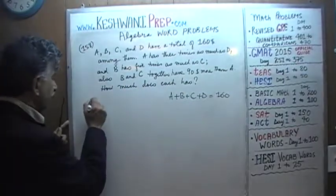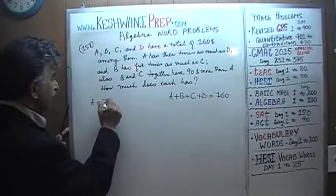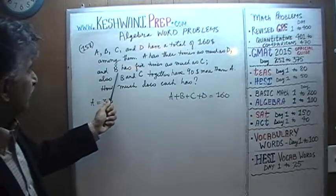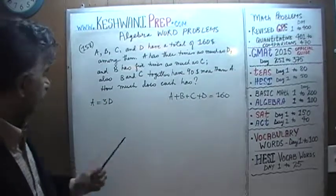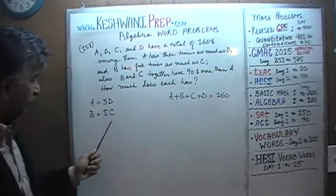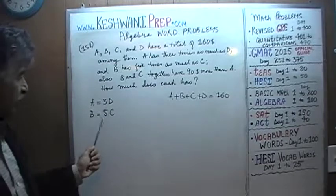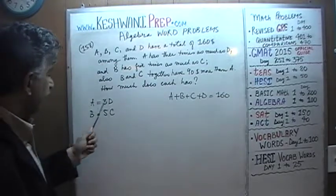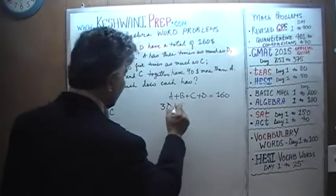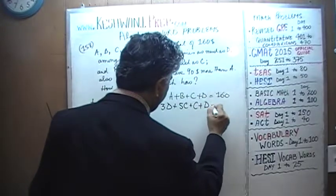Furthermore, A has three times as much as D, so A = 3D — that's our second equation. Then B has five times as much as C, so B = 5C — that's our third equation. Let's substitute these in: A equals 3D, B equals 5C, C is C, and D is D.